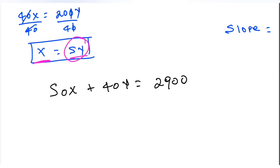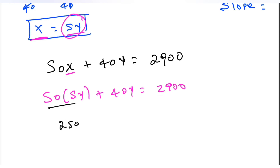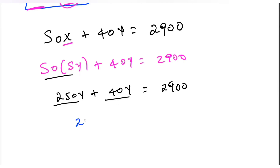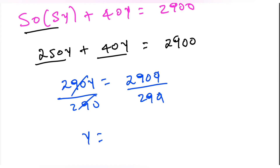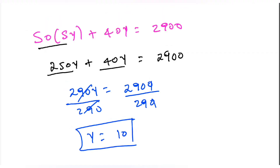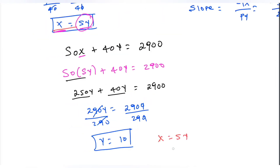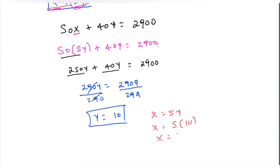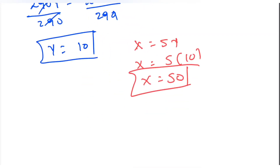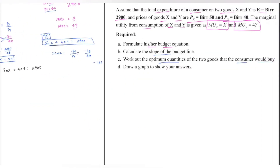Substituting x equal to 5 into the budget equation: 5 times 5 plus 4y equals the budget total. Solving for y gives y equal to 10. So the optimum quantities are x equal to 5 and y equal to 10, representing the consumer's equilibrium and maximum utility position.